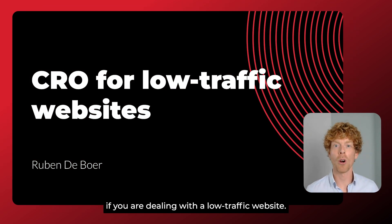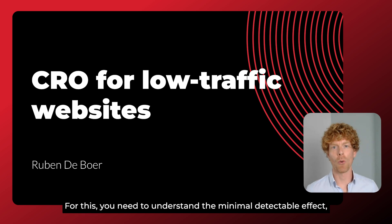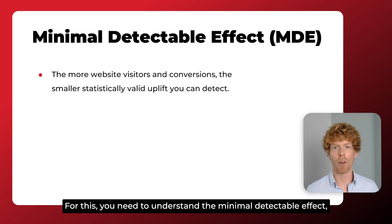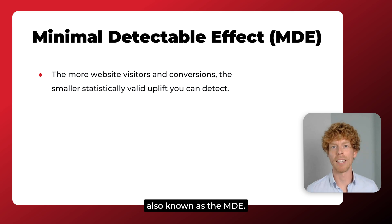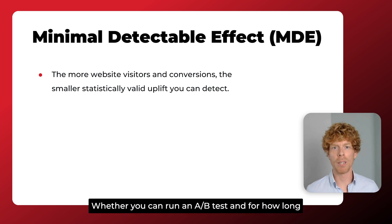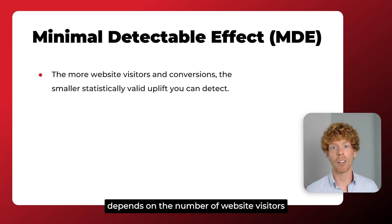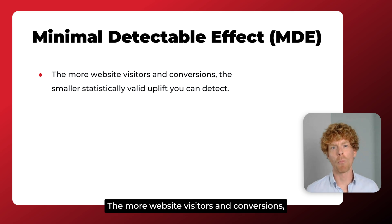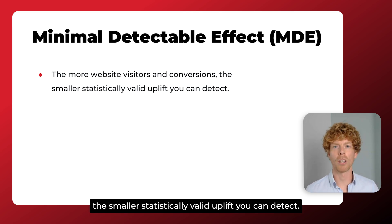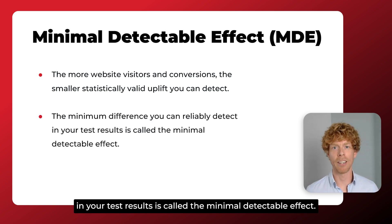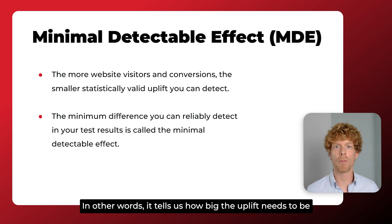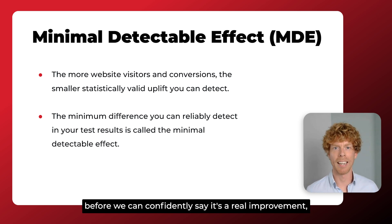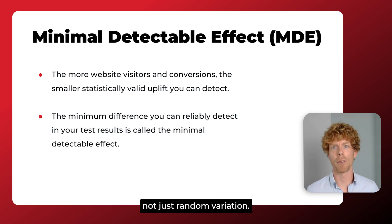you first need to know if you are dealing with a low traffic website. For this, you need to understand the minimal detectable effect, also known as the MDE. Whether you can run an A-B test and for how long depends on the number of website visitors and conversions going through your test. The more website visitors and conversions, the smaller statistically valid uplift you can detect. The minimum difference you can reliably detect in your test results is called the minimal detectable effect. In other words, it tells us how big the uplift needs to be before we can confidently say it's a real improvement, not just a random variation.